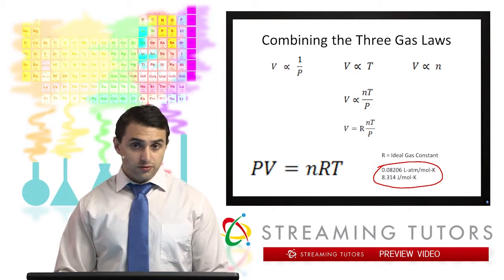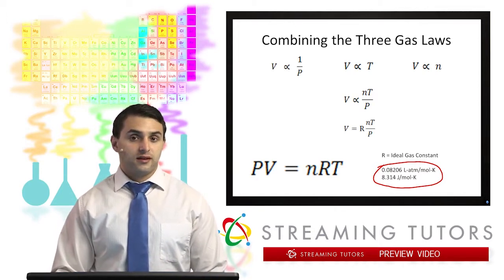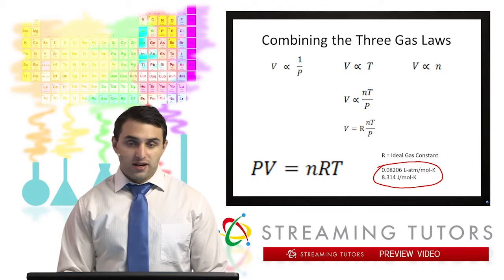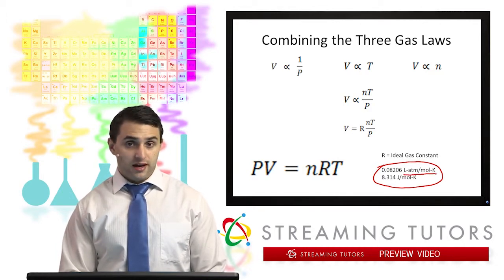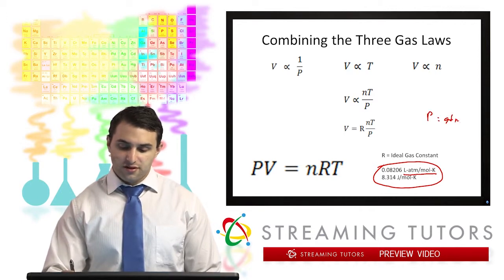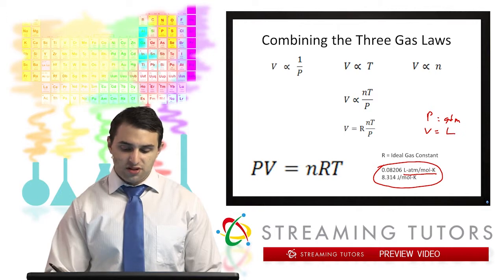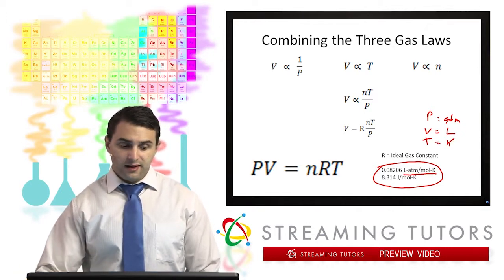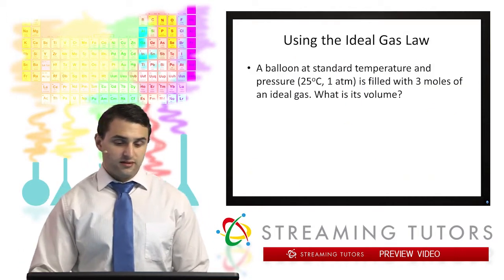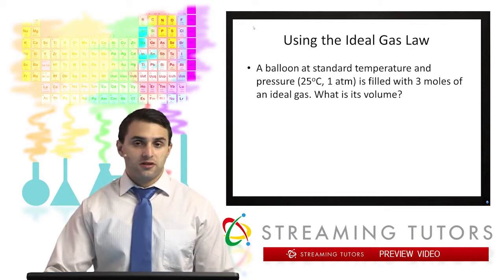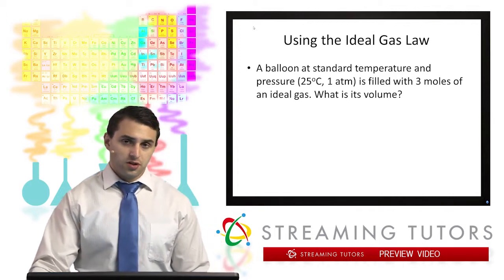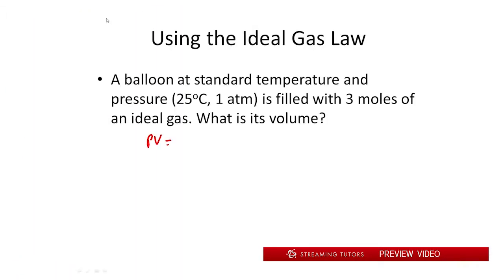When doing calculations, select the gas constant that matches the units you're dealing with. When using 0.08206 L·atm/mol·K, we always want pressure in atmospheres, volume in liters, and temperature in Kelvin. For example: a balloon at standard temperature and pressure — 25 degrees Celsius, 1 atm — is filled with 3 moles of an ideal gas. What is the volume of the balloon? Writing out the ideal gas law, PV = nRT, we know pressure is 1 atm, n is 3 moles, and we solve for volume.